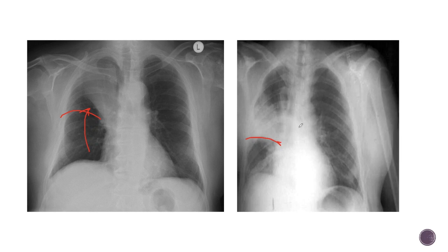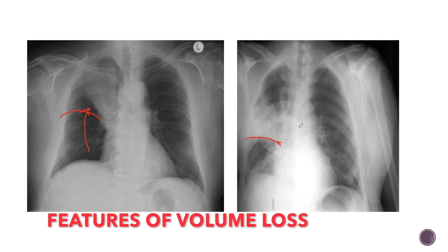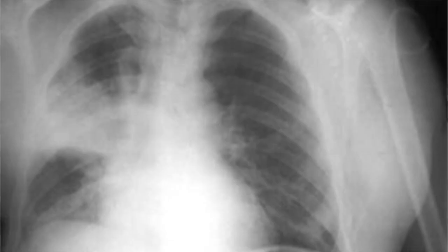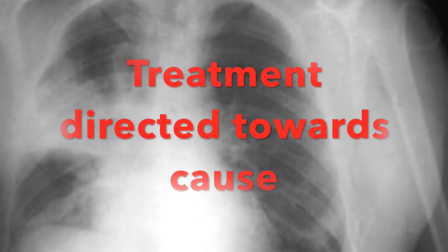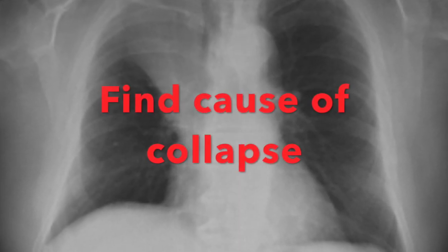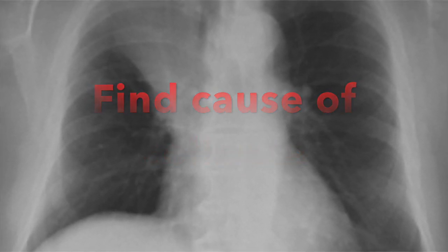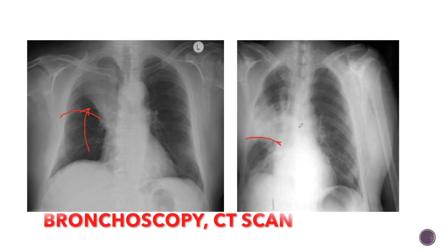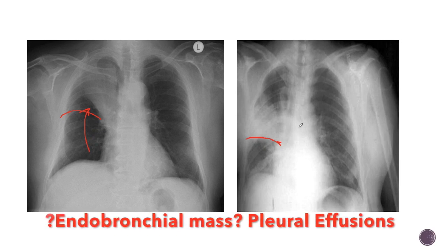Whenever you see opacity in the lungs and are confused whether it is consolidation or collapse, look for features of volume loss. When there is consolidation, treatment is directed towards the cause — whether it is lung contusion, pneumonia, and so on. In case of collapse, the next step is to find the cause, whether it is an endobronchial foreign body discovered on bronchoscopy or CT scan, or whether the collapse is related to other causes. Thank you.